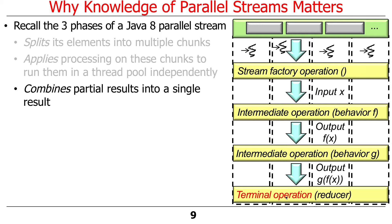There are some interesting things with respect to combination. Sometimes you combine partial results, but sometimes — depending on what kind of collector you use — if you use a concurrent collector, for example, there actually isn't a partial result merge. That's kind of interesting, and I'll talk about that a little bit later.